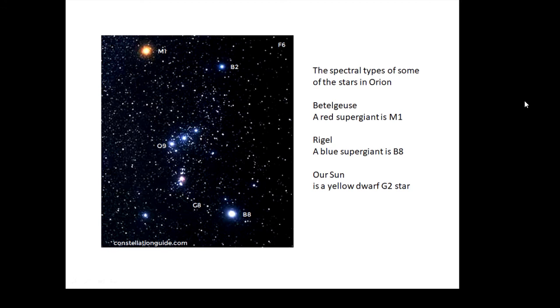Betelgeuse is M1 and Rigel is B8. Betelgeuse is a red supergiant M1, Rigel, a blue supergiant, is B8. Our Sun is a G2 star, obviously it's not in Orion.